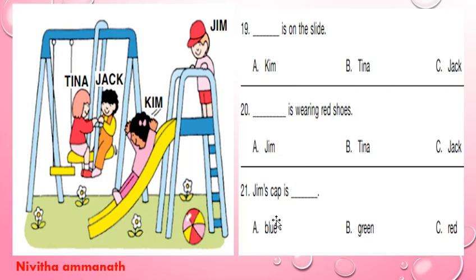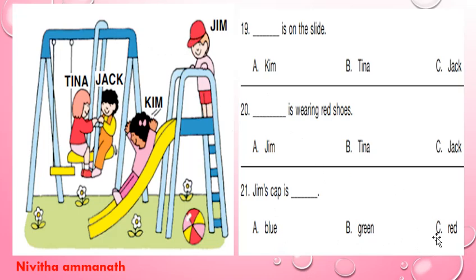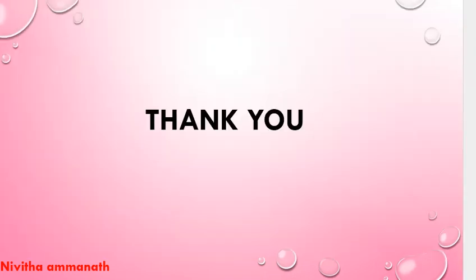Next question: Jim's cap is dash — blue, green, red. Jim's cap is red in color, so 21C is the correct option. Thank you for watching.